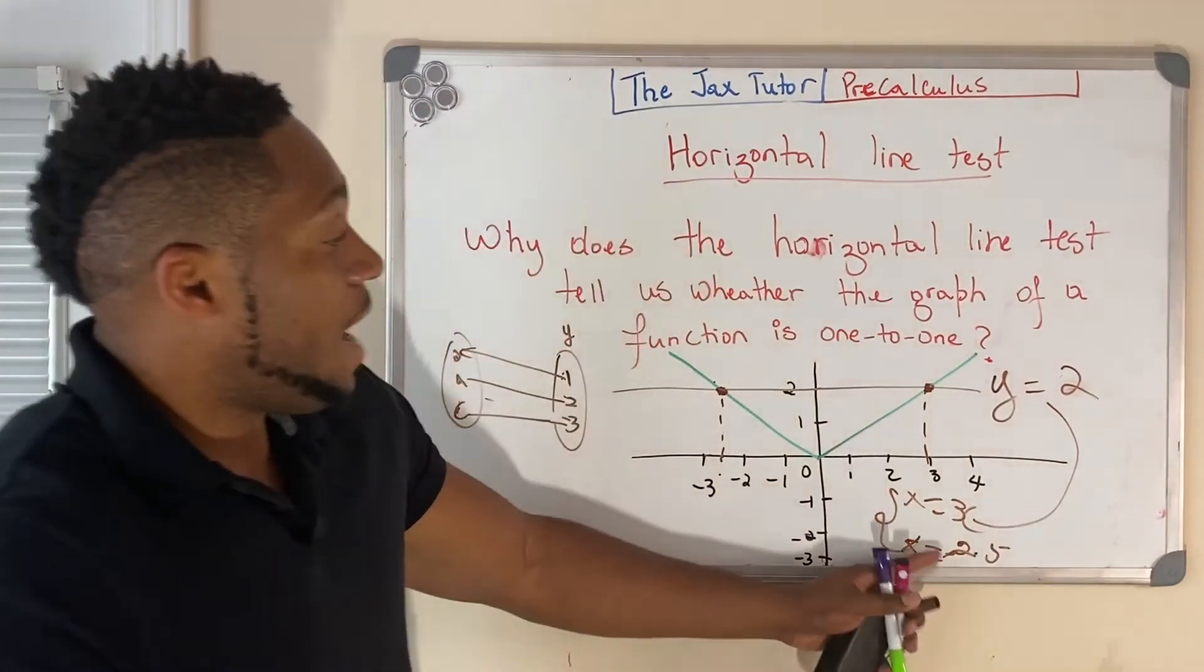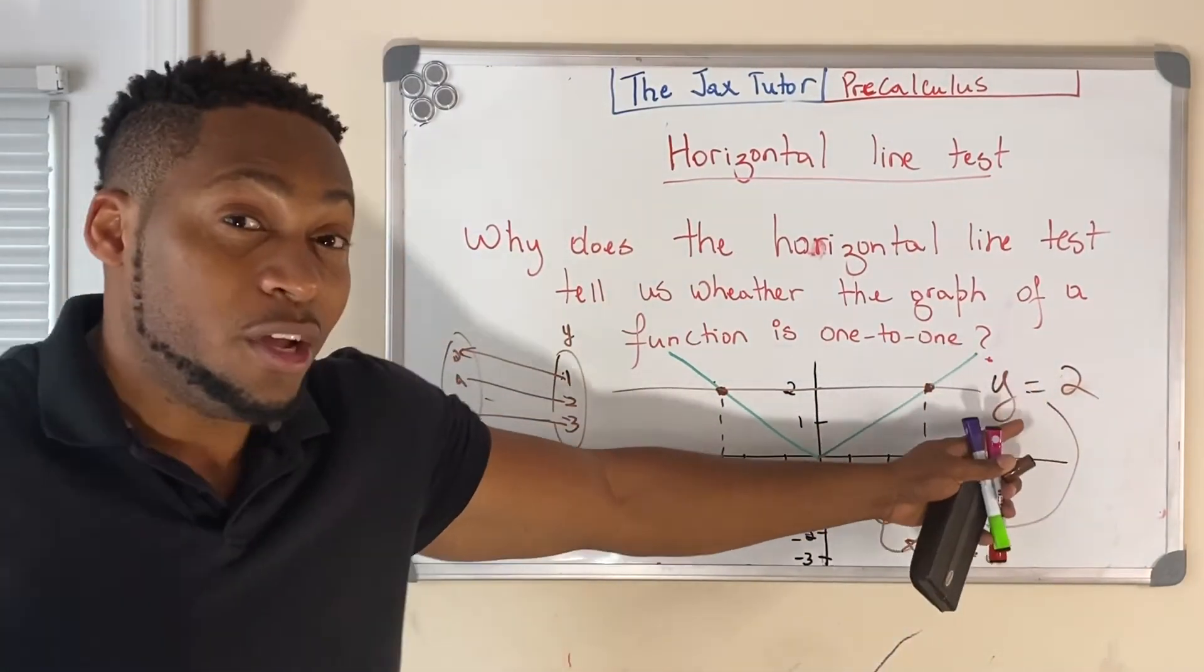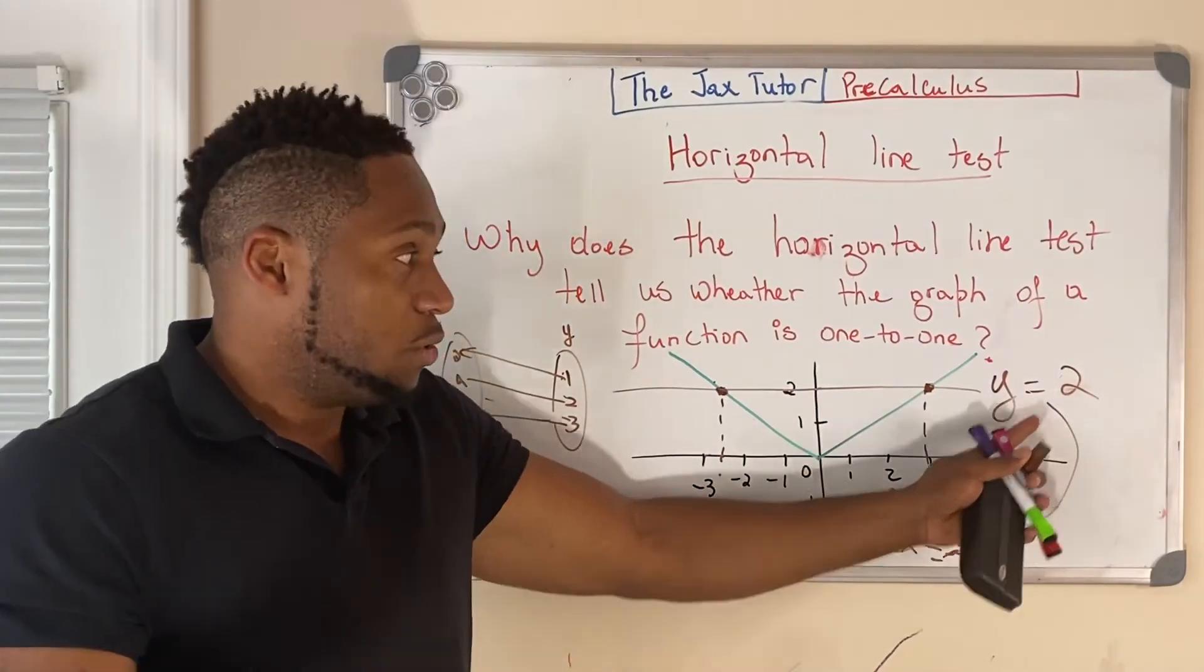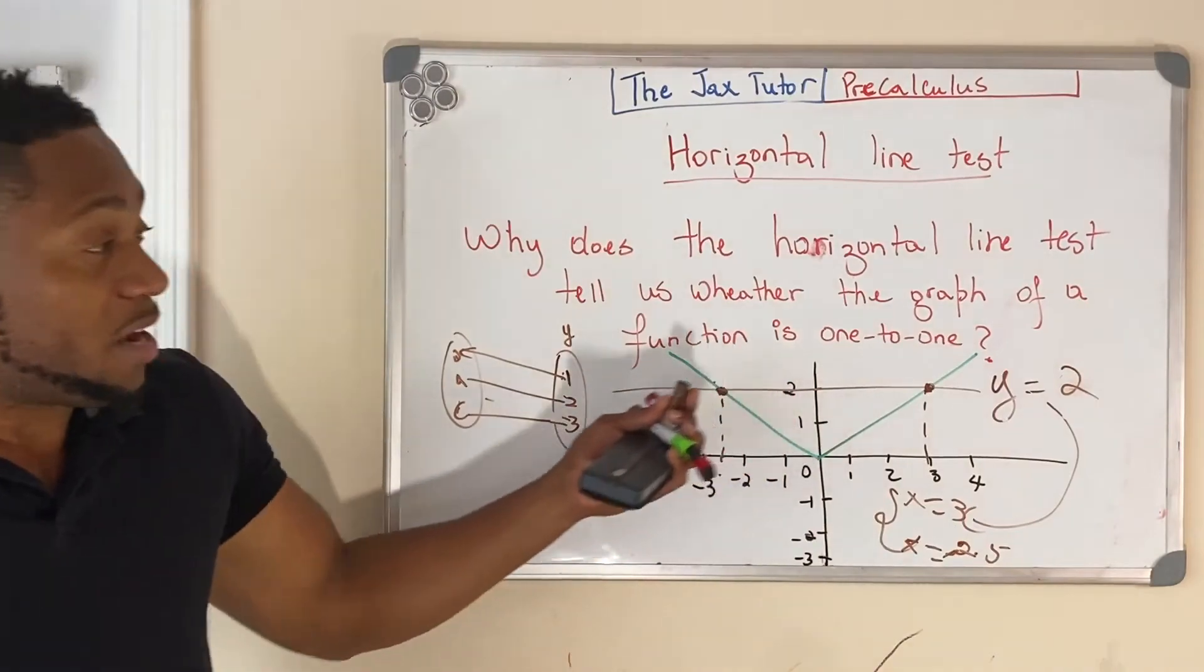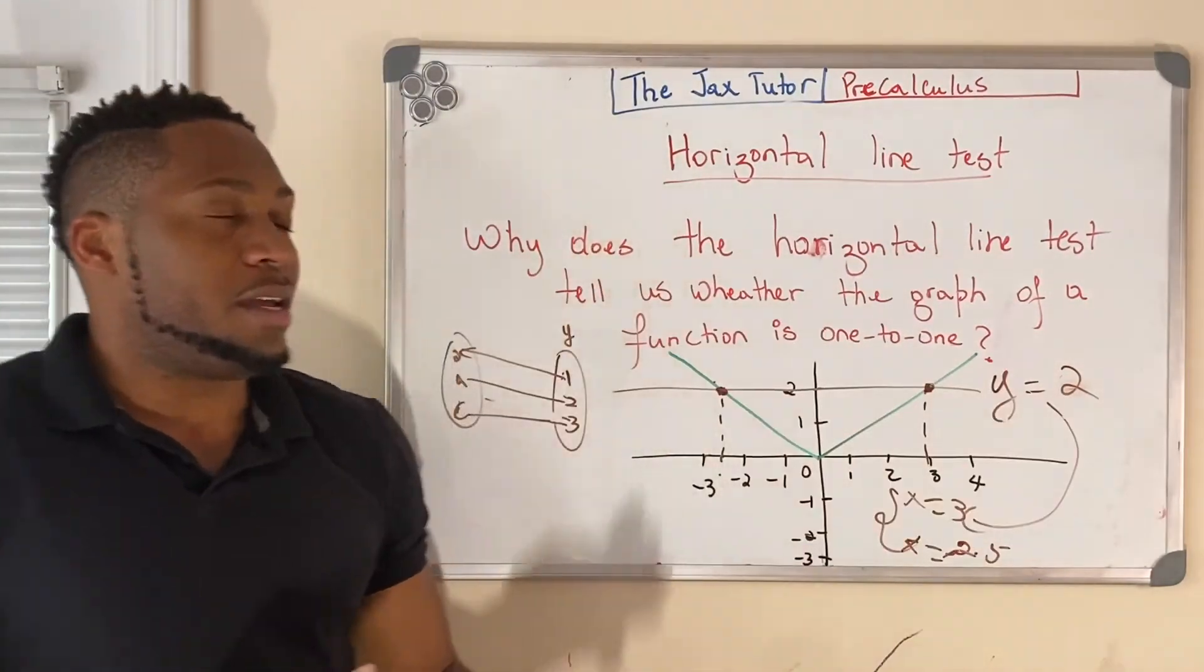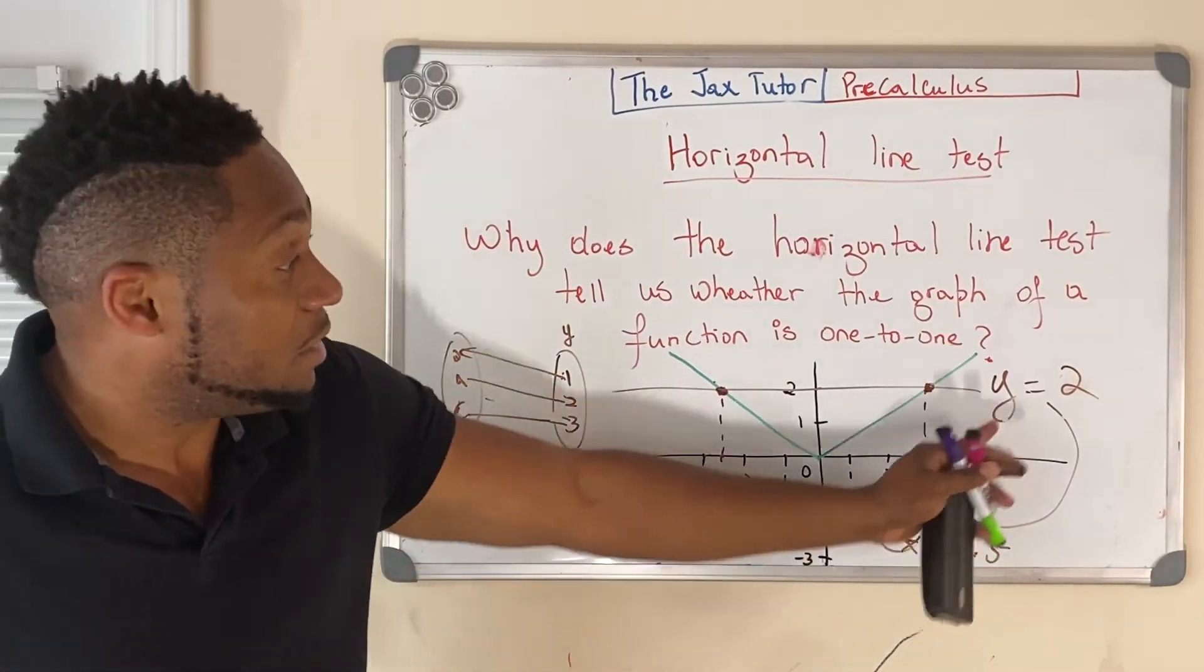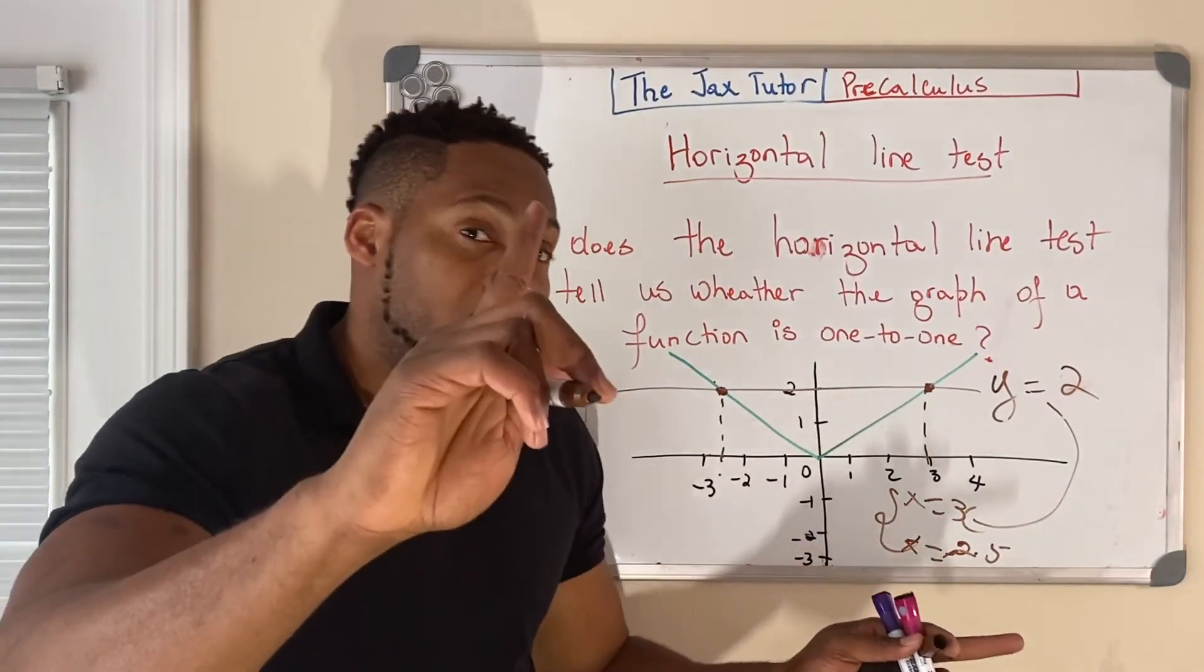So, in that case, that y value is associated with two different x values, which is the same thing that the definition tells us not to do: an output associated with two different inputs. And that's why the horizontal line test tells you, hey, is this one-to-one or not? Because that y value 2 needs to be associated with only one value.